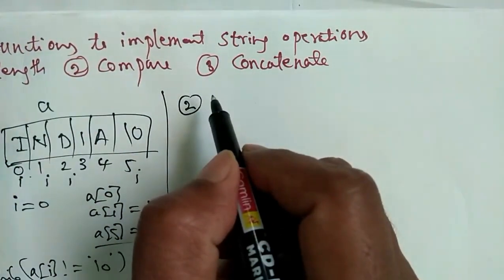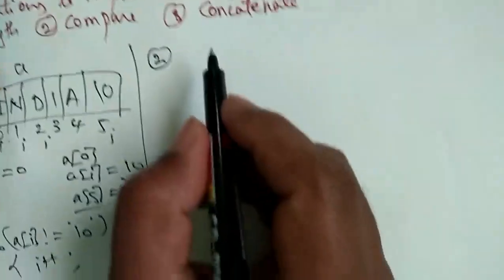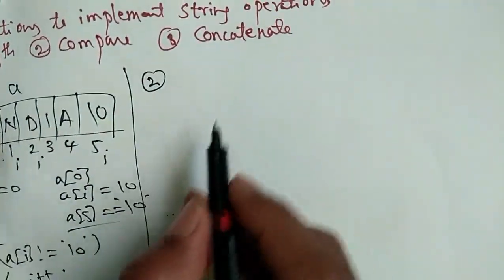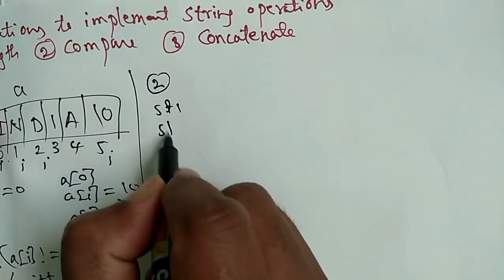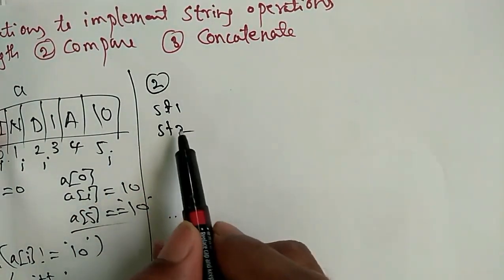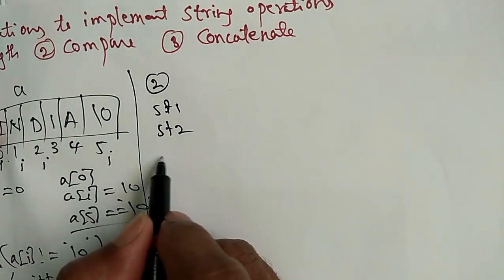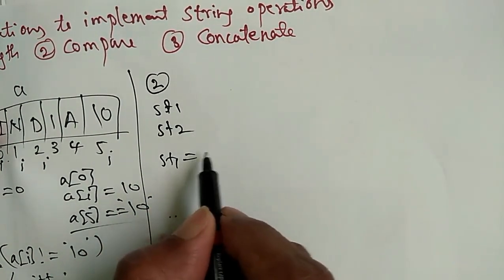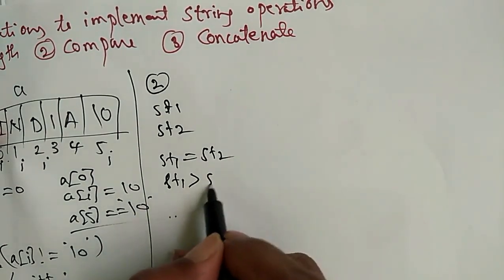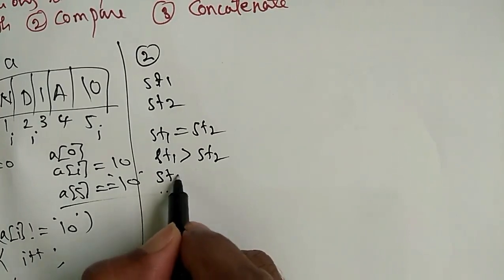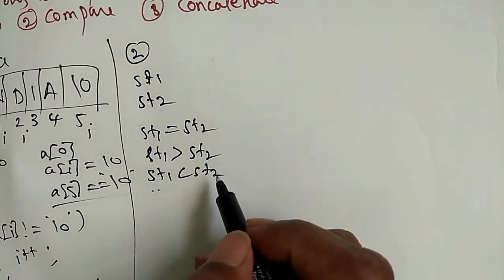The second function is comparing two strings. How do we compare two strings? Consider string 1 and string 2. The possibilities are: string 1 equals string 2, string 1 is greater than string 2, or string 1 is less than string 2. For example, consider 'Ram' and 'Raj', 'Ram' and 'Ram', and 'Raj' and 'Ram' — three conditions.